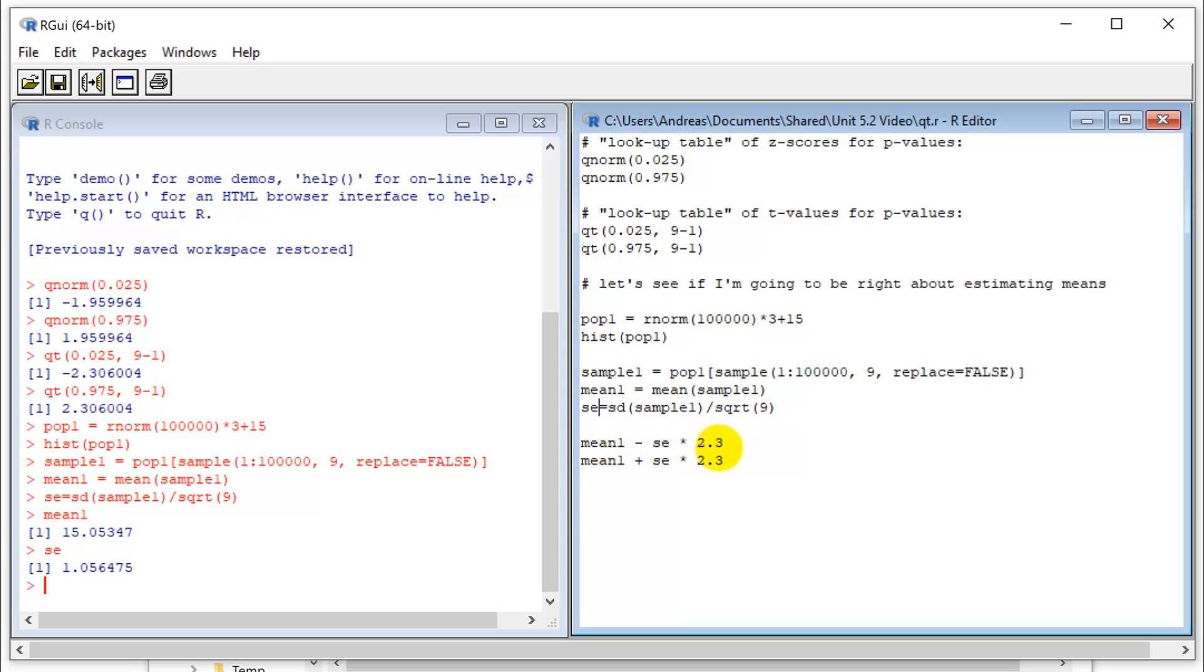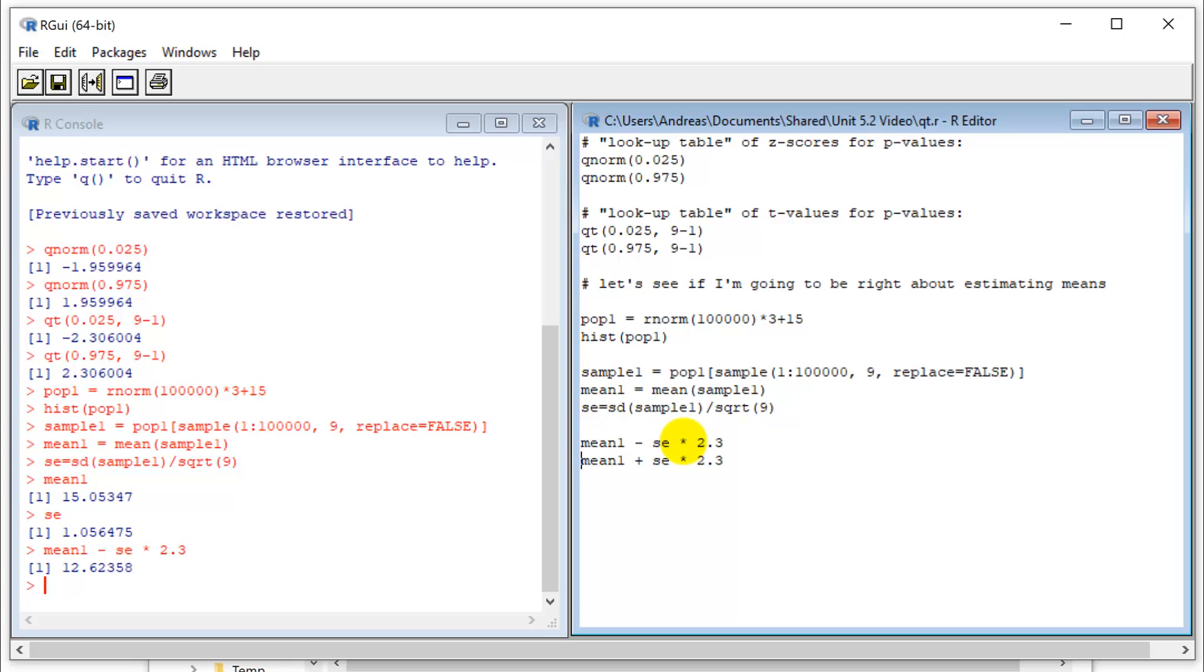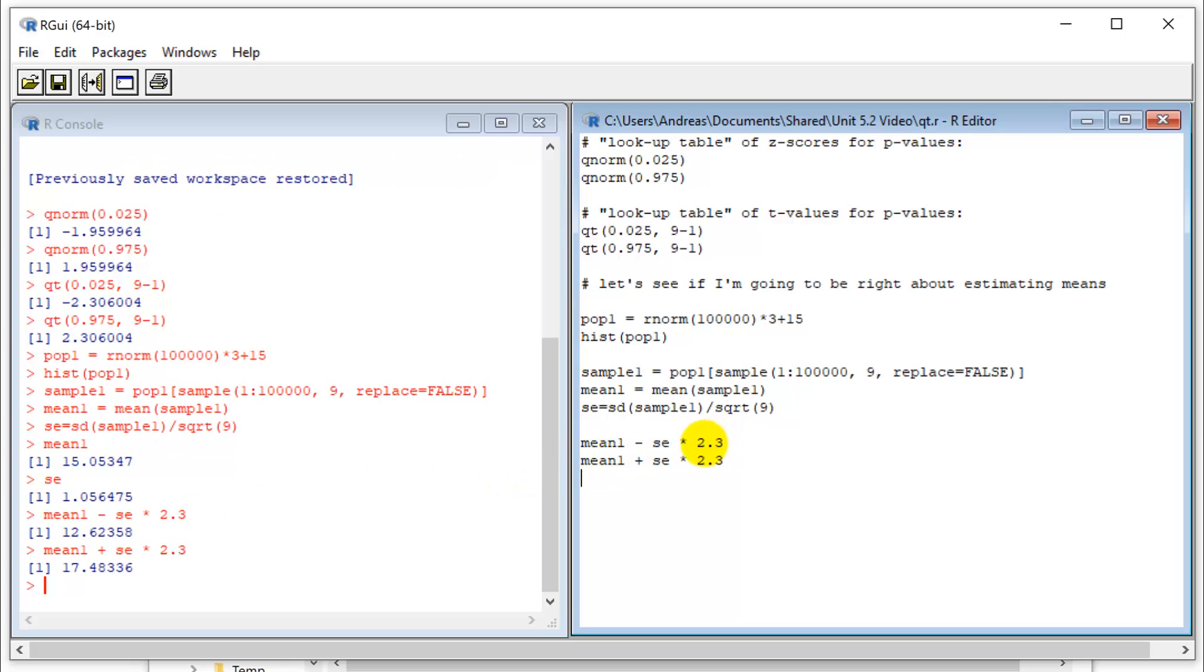And now I can calculate my confidence interval by multiplying the standard error times this factor here that I figured out. So plus and minus the standard error times 2.3. And let's see. So the statement that I would make is there's a 95% chance that the true mean of the population is within this confidence level here from 12.6 to 17.5. So I was right about that.